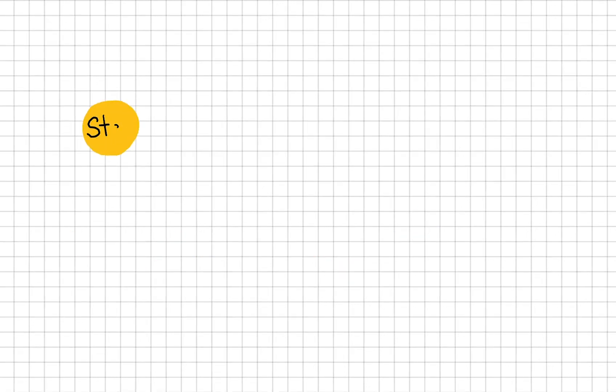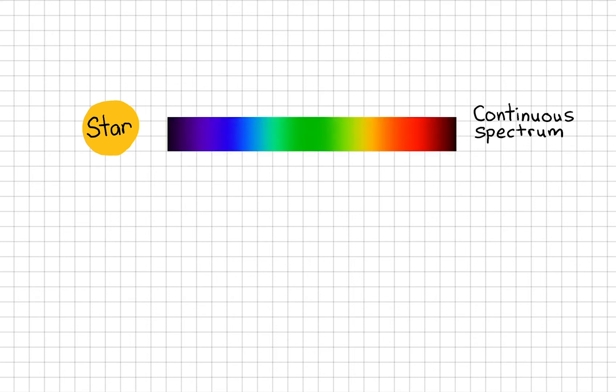A star is a source of light. Observing its light waves through a spectrometer, we will find a continuous spectrum. A continuous spectrum is made of a continuous range of wavelengths or frequencies.